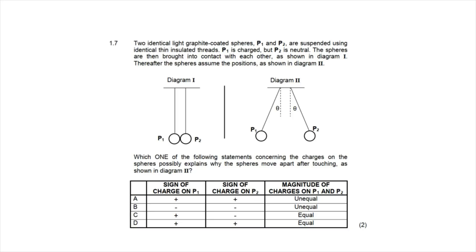Question 1.7: two identical graphite-coated spheres P1 (charged) and P2 (neutral) are suspended by insulated threads. They are brought into contact, then move apart as shown in diagram two. We observe that in diagram two the spheres repel each other, which means they must carry like charges after contact.